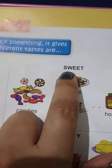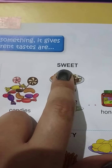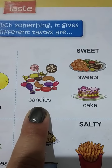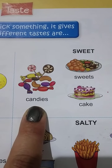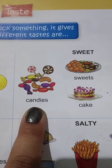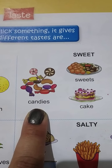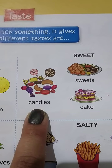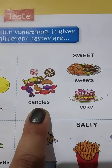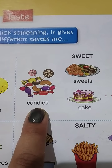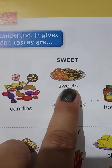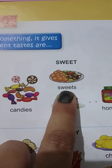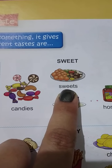Now next one is sweet taste — means meetha. Candies. Ab chocolate aur candies khaate ho na? Lollipop, Cadbury — in sab ka taste kaisa hota hai? Meetha. Aap sab bacchon ko meetha bahut pasand hota hai. So candies are sweet in taste. Sweets means mithai. Mithai ka taste kaisa hota hai? Meetha.